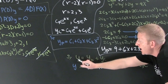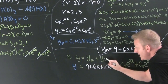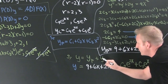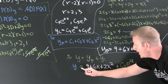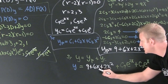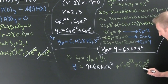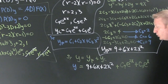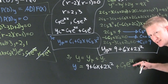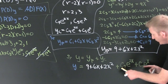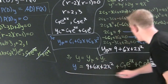Step seven: the general solution is y_c plus y_p. So the general solution is y = 9 + 6x + 2x² + c₄e^(2x) + c₅e^(x). If we had initial conditions, we'd apply them here to find c₄ and c₅. And we're done.